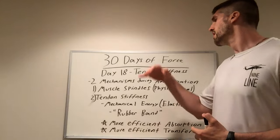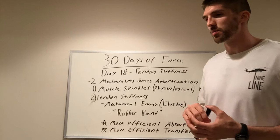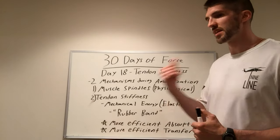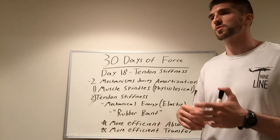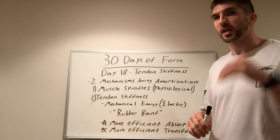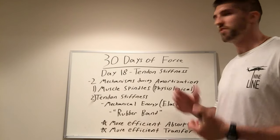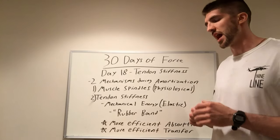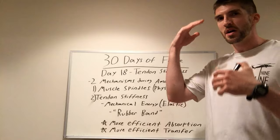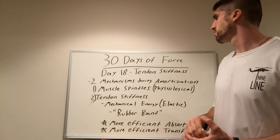Our muscle spindles are kind of like a built-in injury prevention mechanism. When a muscle lengthens rapidly, there are nerves and sensors in your muscles that send a signal to your spinal cord, and that causes the innervated muscle to reflexively contract and shorten. That's really the first mechanism at play during that amortization phase where we switch from force absorption into force production. We can view it as a physiological mechanism — the nervous system, brain, spinal cord, and muscles are all involved.